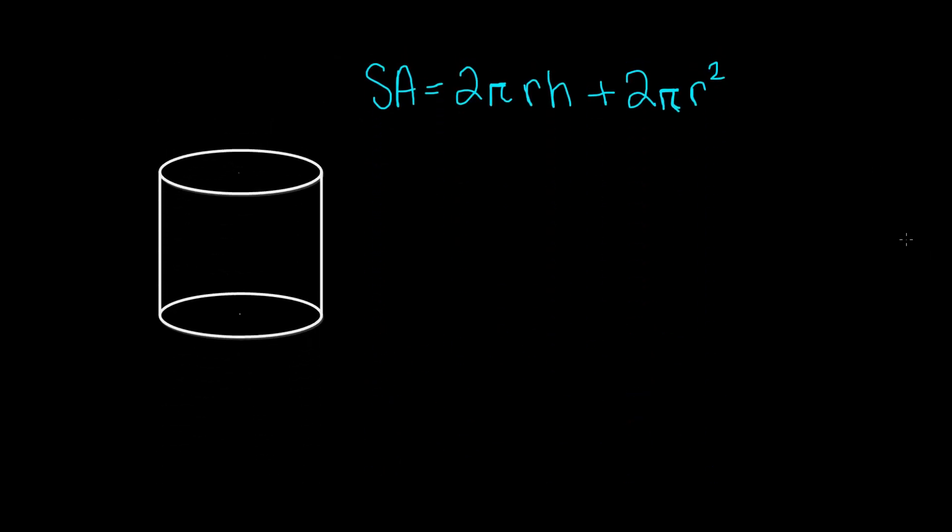Here I have a cylinder. To find the surface area of a cylinder, you have to follow this formula, which is 2 times pi times radius times height plus 2 times pi times radius squared.